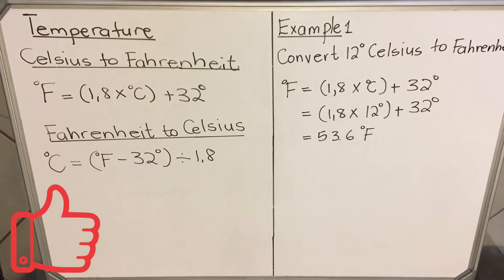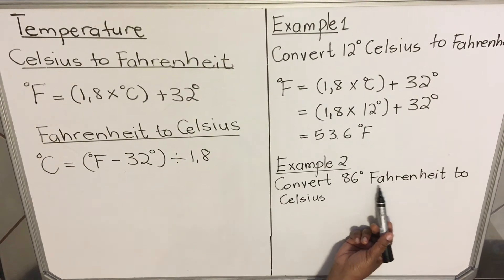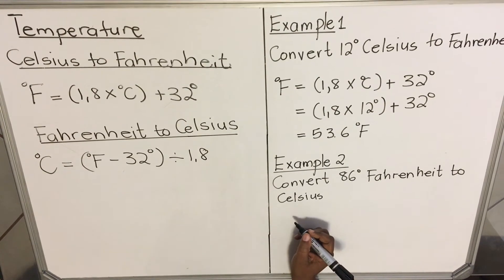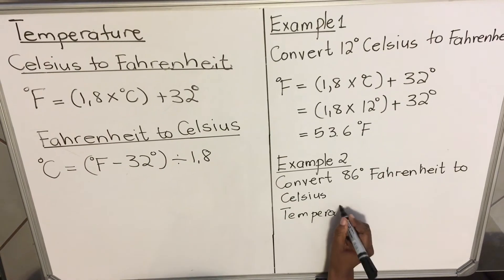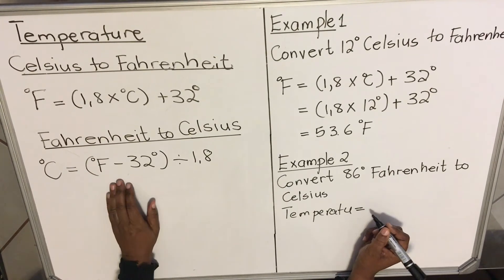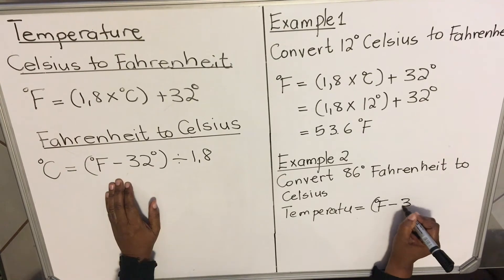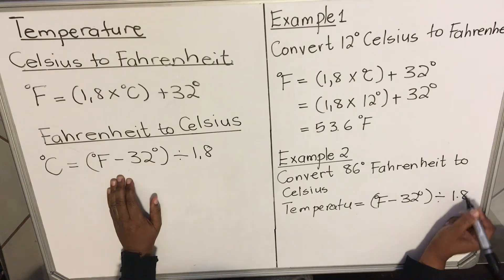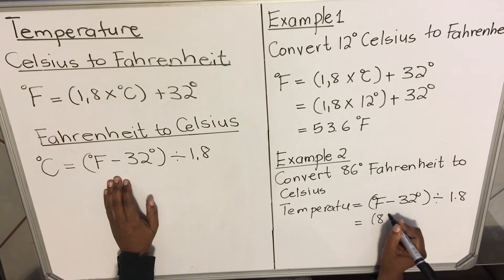Okay, let's look at example two. We are converting 86 Fahrenheit to Celsius. So instead of writing Celsius, I'll write temperature. The temperature measured is equal to - then the formula is: (°F - 32) ÷ 1.8. So the Fahrenheit you are given here is 86 minus 32 degrees divided by 1.8.